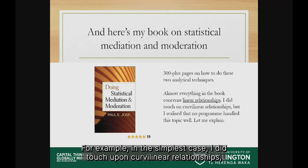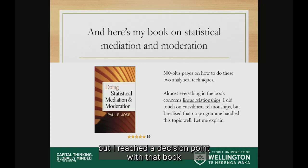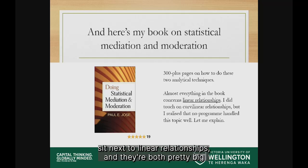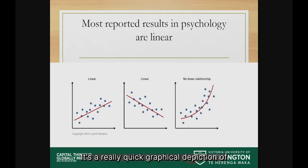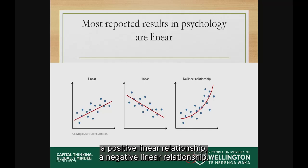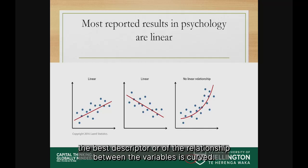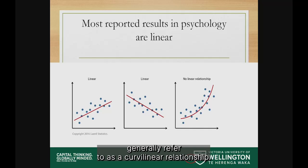I did touch upon curvilinear relationships in the book, but I reached a decision point where I thought I was sitting at about 200 pages and it would double the pages I'd have to write — so maybe not. Curvilinear relationships sit next to linear relationships and they're both pretty big. You get data where it looks like the best descriptor of the relationship between variables is curved, and that's what we generally refer to as a curvilinear relationship.